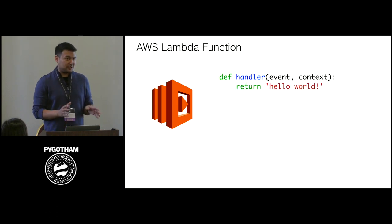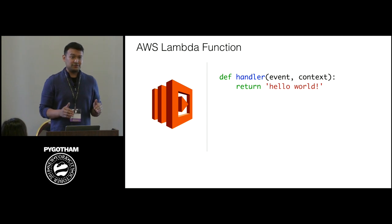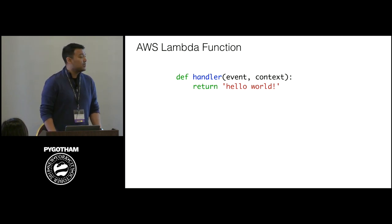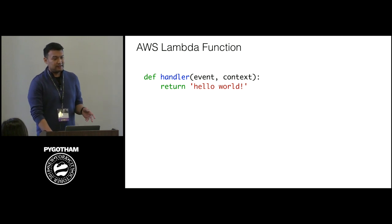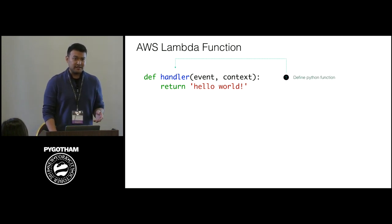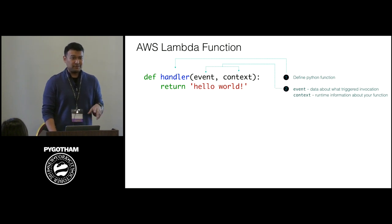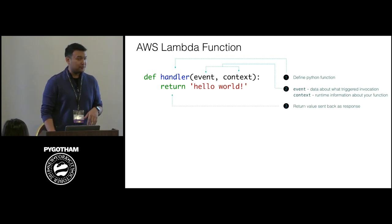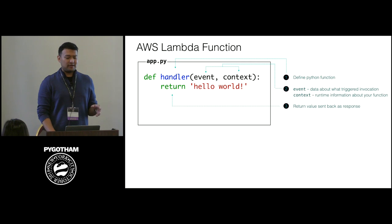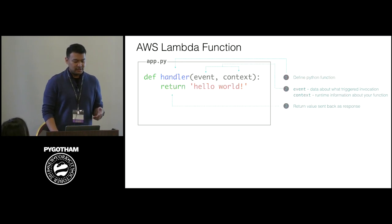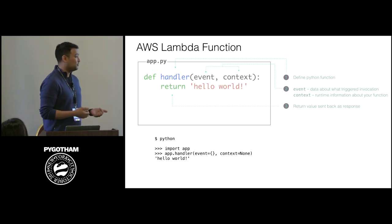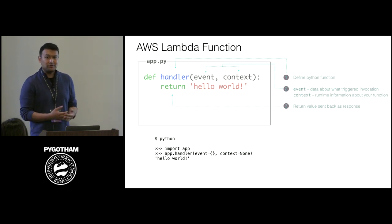Let's start from the very beginning and build up. We'll take a normal Python function and slowly introduce Lambda. So let's take this function — we've defined a handler that takes two parameters. The second parameter is just the interface Lambda needs. The function returns 'hello world.' If I saved this in an app.py file and ran it locally, I'd just import app in the REPL and run app.handler to get my result.